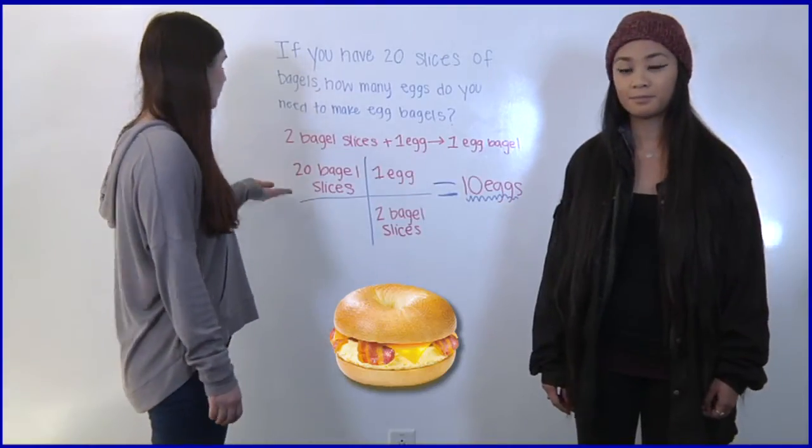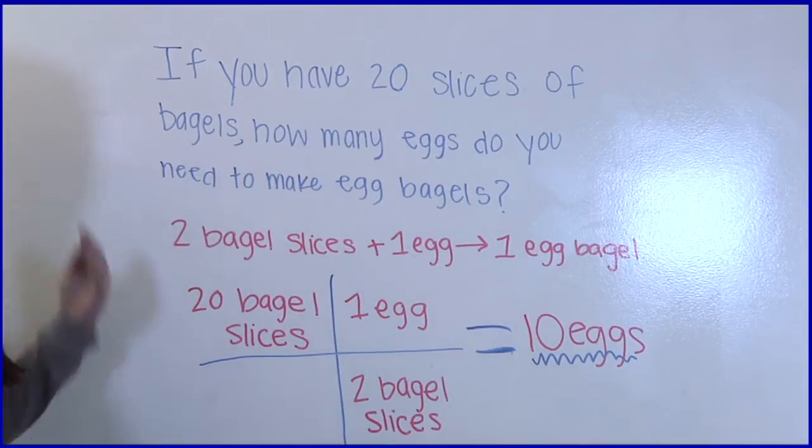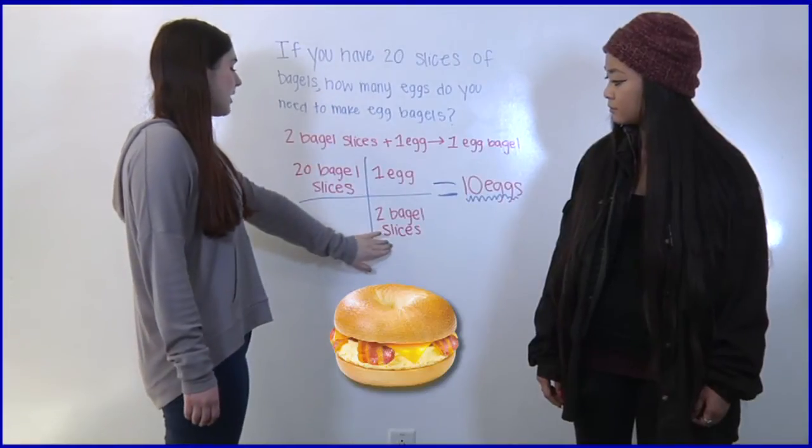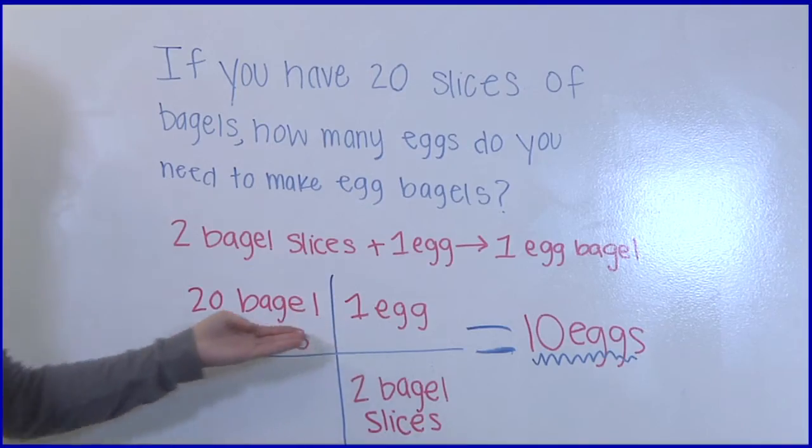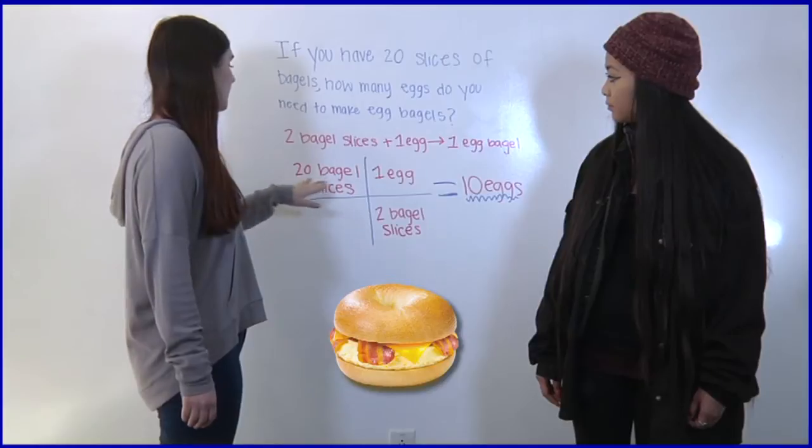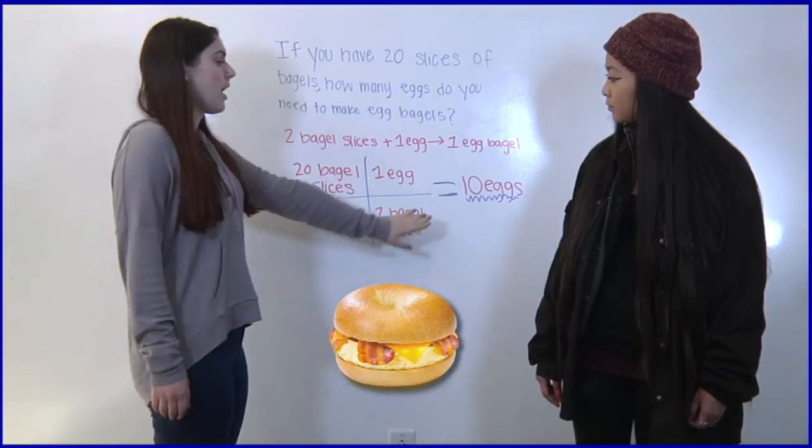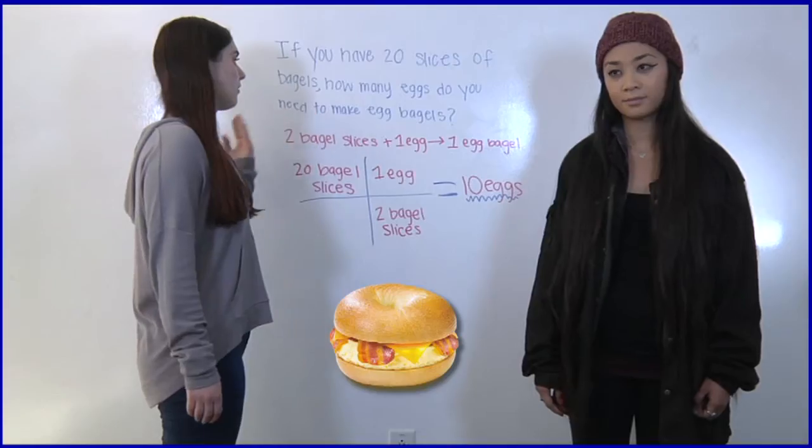So we're first going to write down what's given, 20 slices, so 20 bagel slices. Then we're going to write two bagel slices so that these cancel out and then we're going to have one egg here and then we're going to times 20 times 1 divided by 2 and that equals 10 eggs and that solves the question.